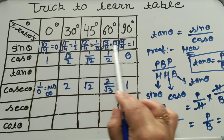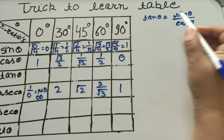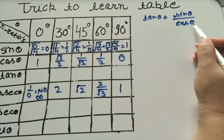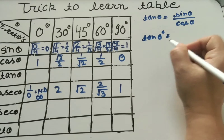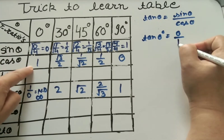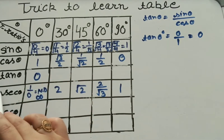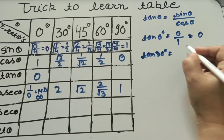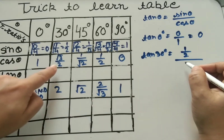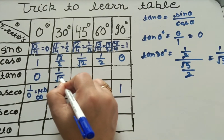We have all values of sin theta and cos theta. Now we find tan theta = sin theta upon cos theta. For tan 0°: sin 0° = 0, cos 0° = 1, so 0/1 = 0. For tan 30°: (1/2) ÷ (√3/2) — 2 cancels with 2 — answer is 1/√3.